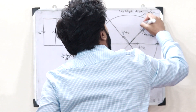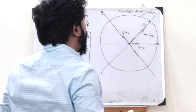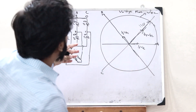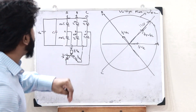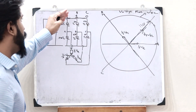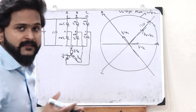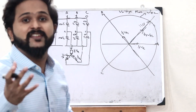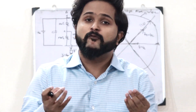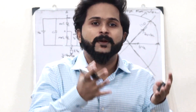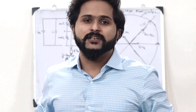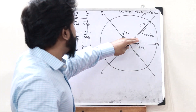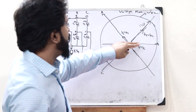This is the basic process of what we refer to as Space Vector Modulation. Like this, we can find the space vector for each of these conditions — 1,1,0, 1,0,1, 0,1,1, and so on. This particular voltage plane is divided into 6 sectors: sector 1, sector 2, sector 3, sector 4, sector 5, and sector 6.